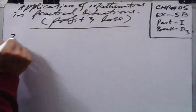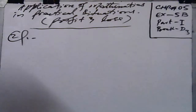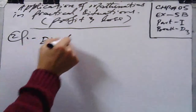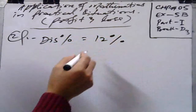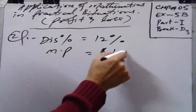Coming to question number two: the market price of a folding table at a hypermarket is $45. The hypermarket gives a 12% discount during a sale. Find the sale price of the folding table.